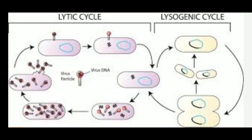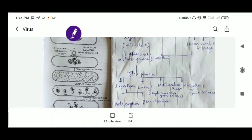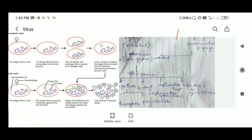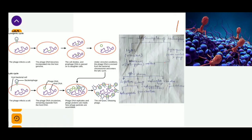The lytic cycle and the lysogenic cycle of phage: the virulent phage always undergoes the lytic cycle, and the non-virulent phage undergoes the lysogenic cycle. When conditions are favorable the virus uses the lytic cycle, and when conditions are unfavorable they use the lysogenic cycle. In the lytic cycle there are phases: infection/adsorption phase, latent phase, maturation phase, and liberation phase.